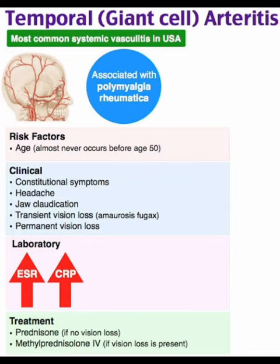In this video I am discussing temporal arteritis, giant cell arteritis. It is the most common systemic vasculitis in the USA, and it is associated with polymyalgia rheumatica. Look at the image.